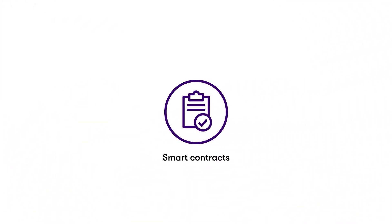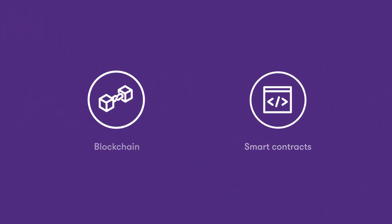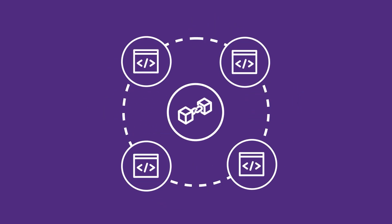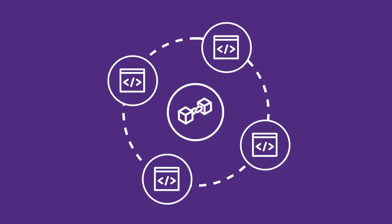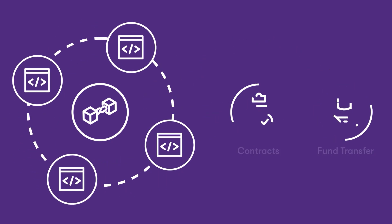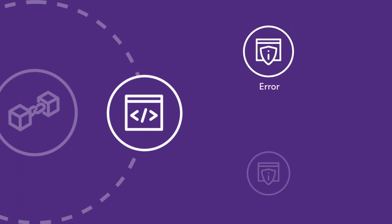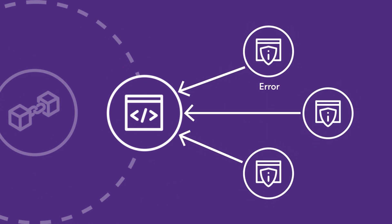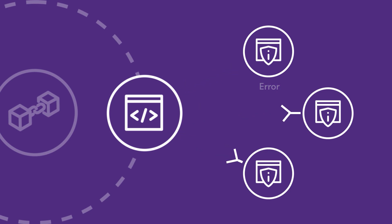Smart Contracts. A blockchain can include little bits of code that automatically act upon the terms of a contract, such as transferring funds when an event occurs — these are called smart contracts. Privacy regulations require smart contracts to provide a way to report and correct any errors. Since blockchain transactions are permanent, you might even need to nullify and replace a smart contract. Make sure you have the appropriate rights to take that action.